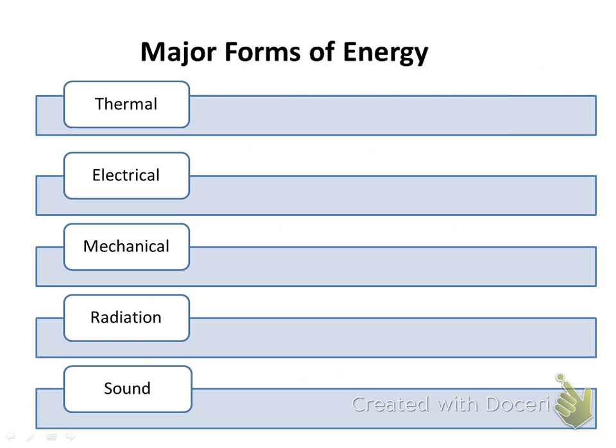The major forms of energy that we're going to deal with — and this goes right in that first block for you — are thermal, electrical, mechanical, radiation, sound, and light. We also spoke about chemical energy. You'll have transitions between all of these different forms of energy at any given time, so don't think that once it's in one form that's it. It'll be released in different ways.